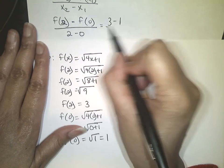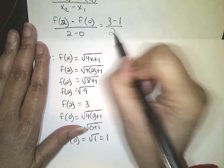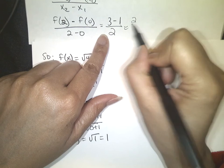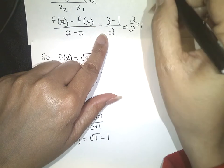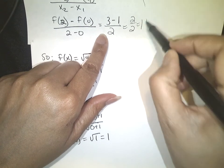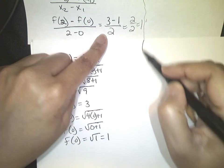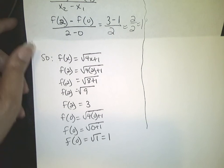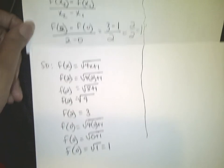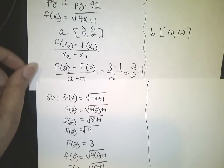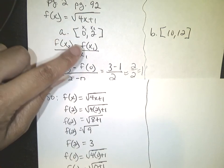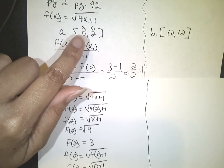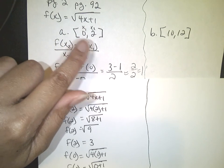Plugging back into the formula: f(2) minus f(0) is 3 minus 1, which is 2 over 2, which equals 1. So the average rate of change — or slope — for this function over the interval zero to two is 1.